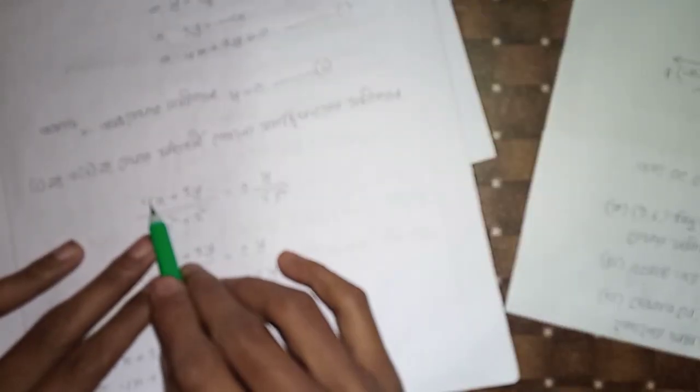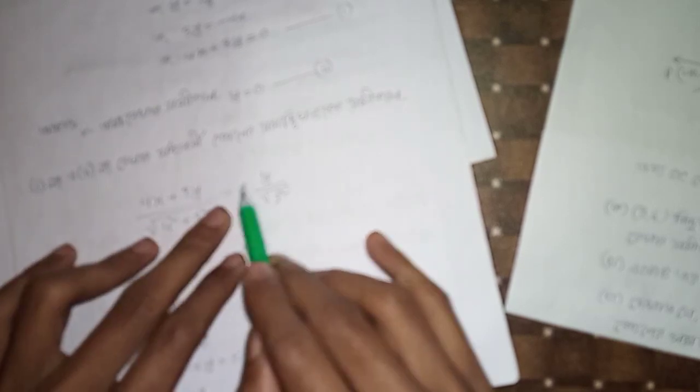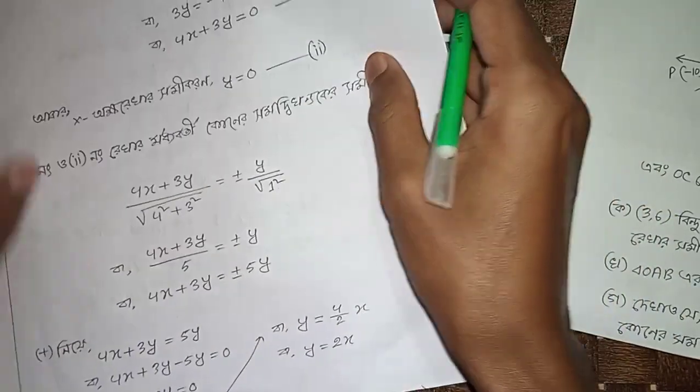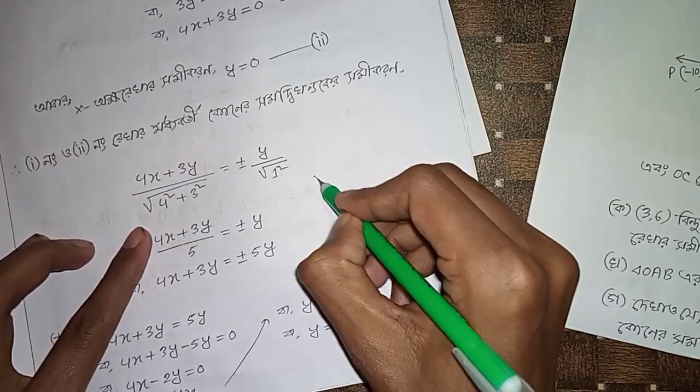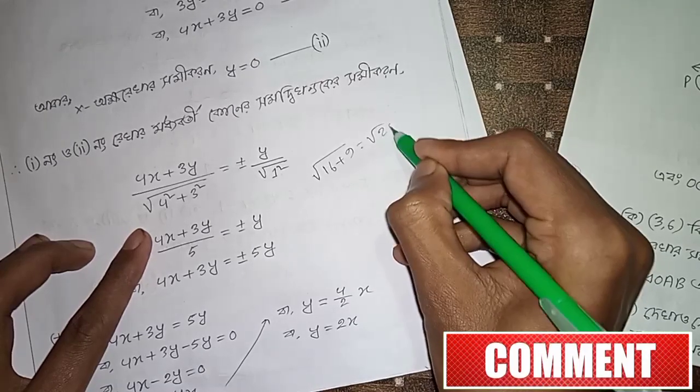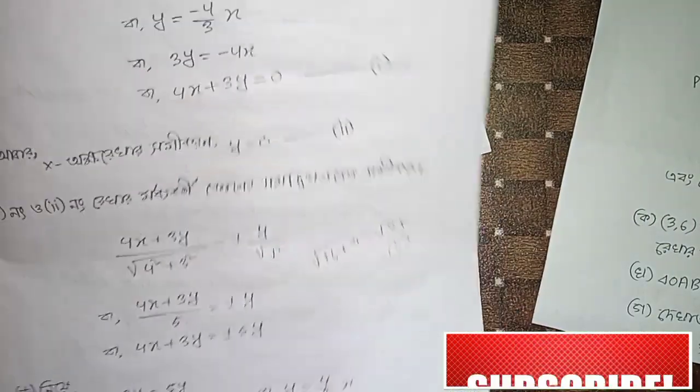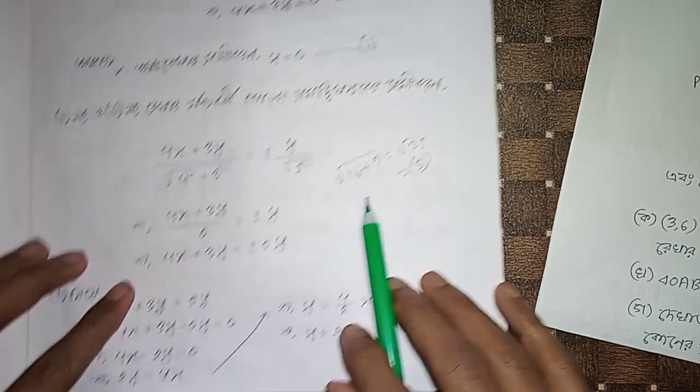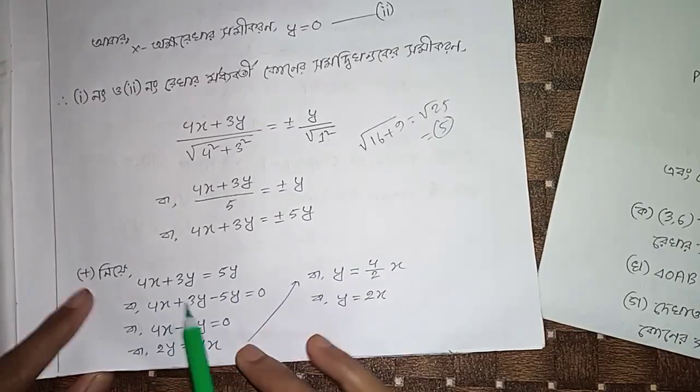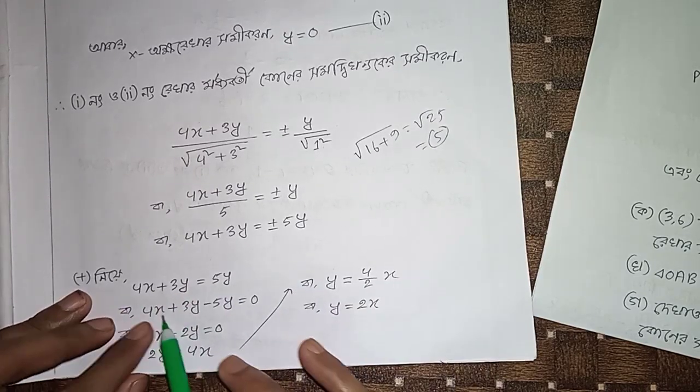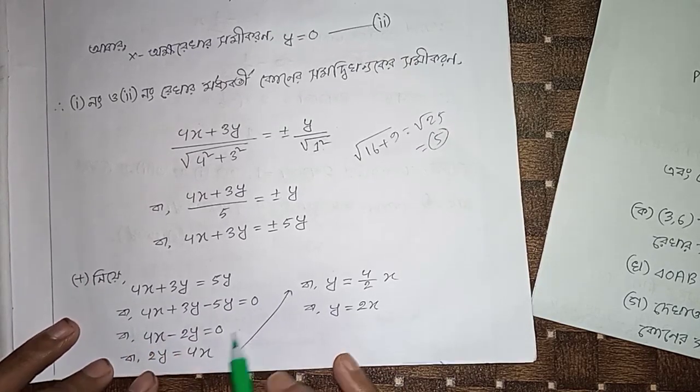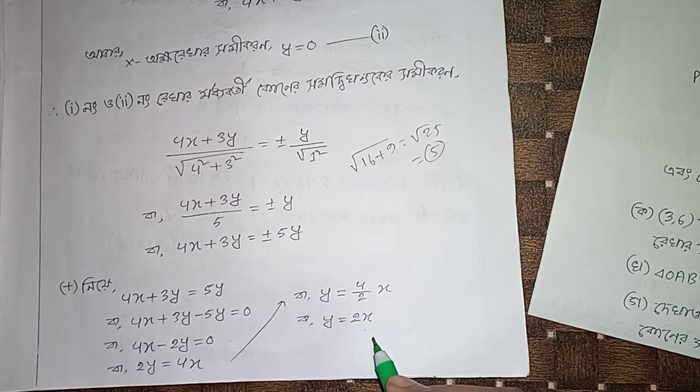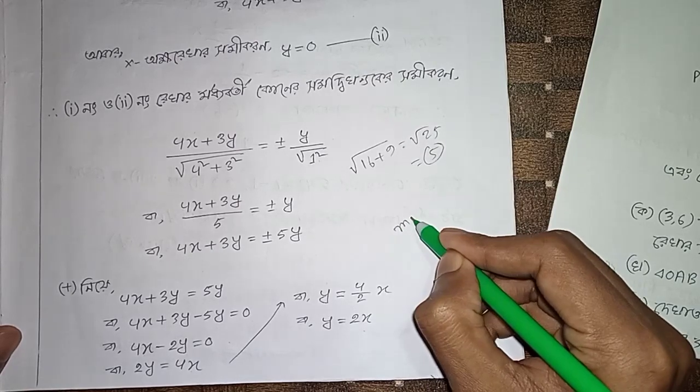4x plus 3y by square plus b square, root over plus minus y by 1 square. Root over 25, that means 5. So 4x plus 3y by 5 equal to plus minus y. So 4x plus 3y equal to plus minus 5y. So 4x minus 2y equal to... 4x plus 3y equal to 5y.